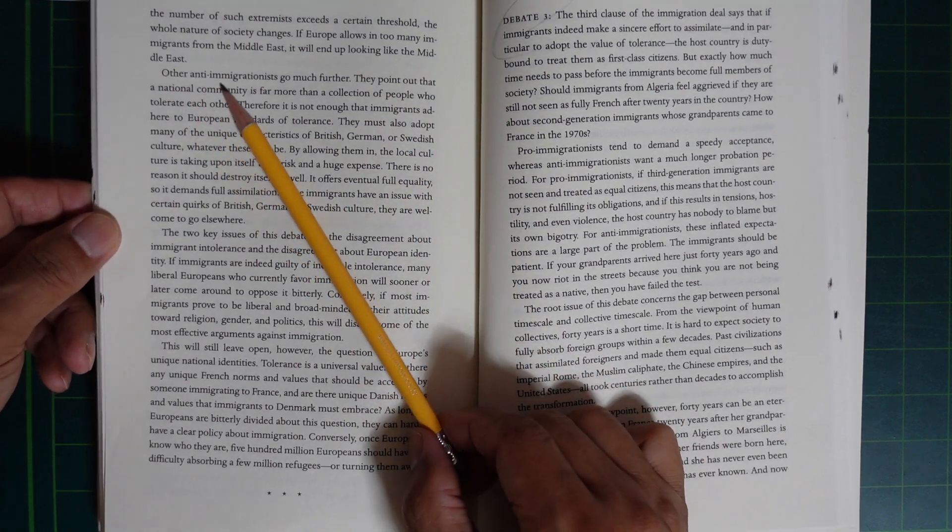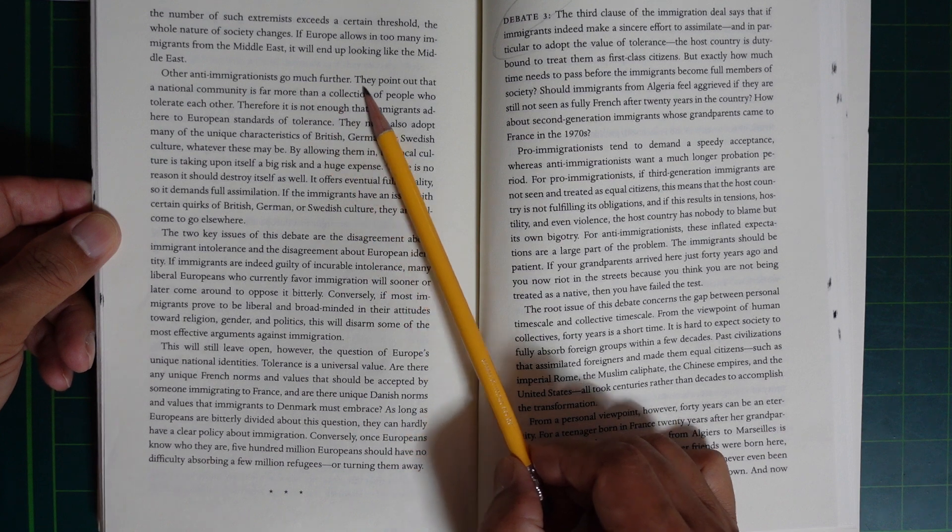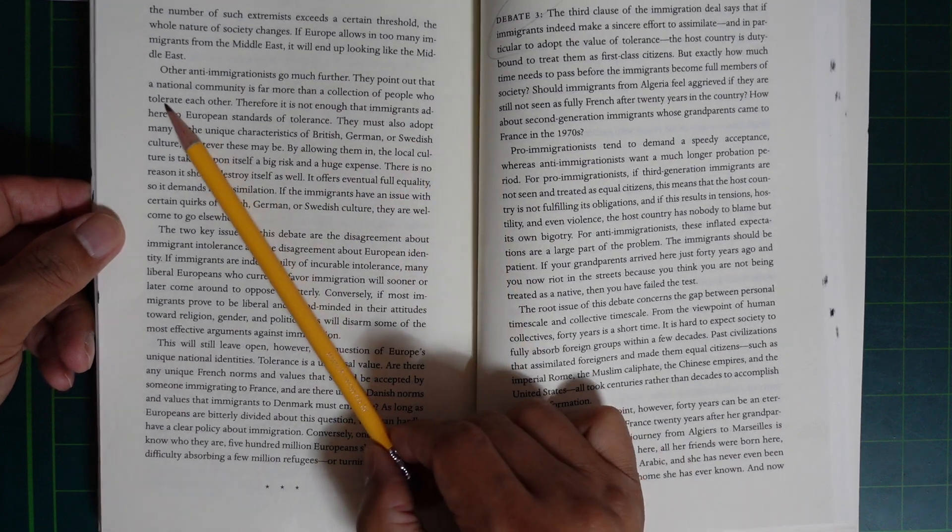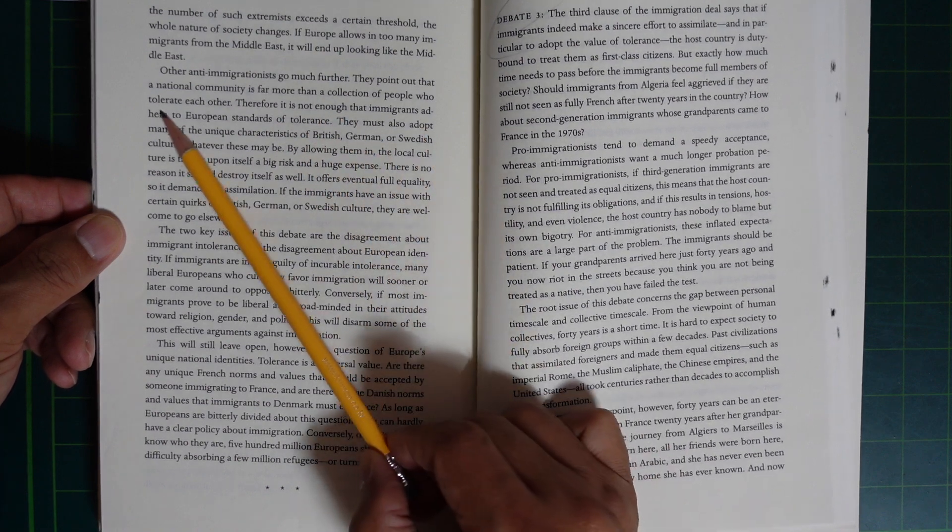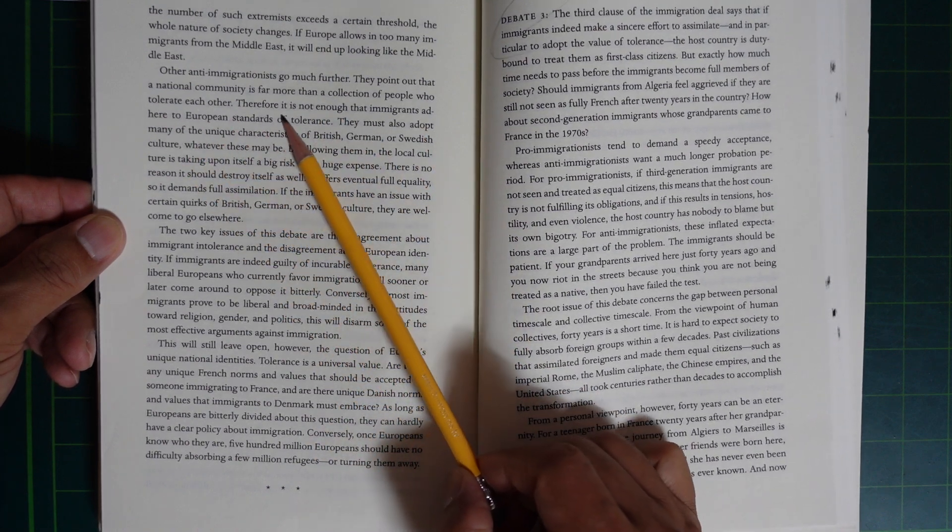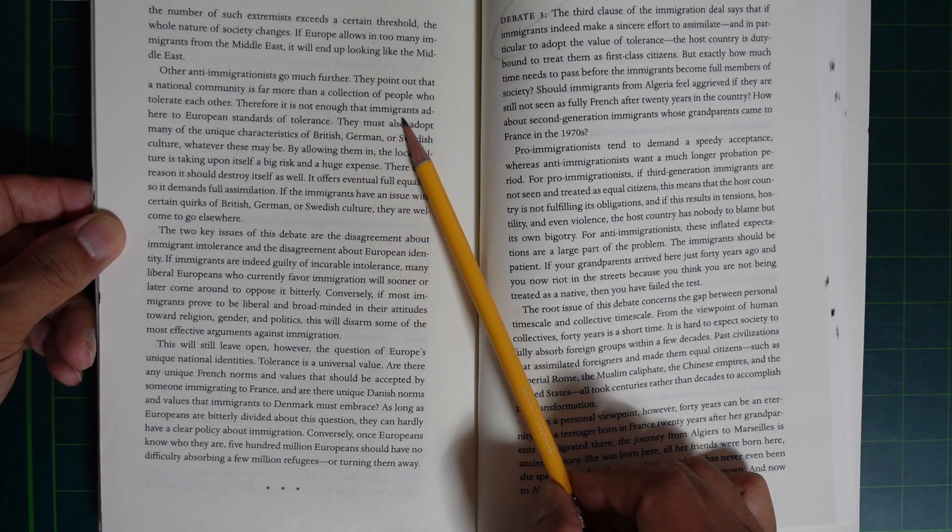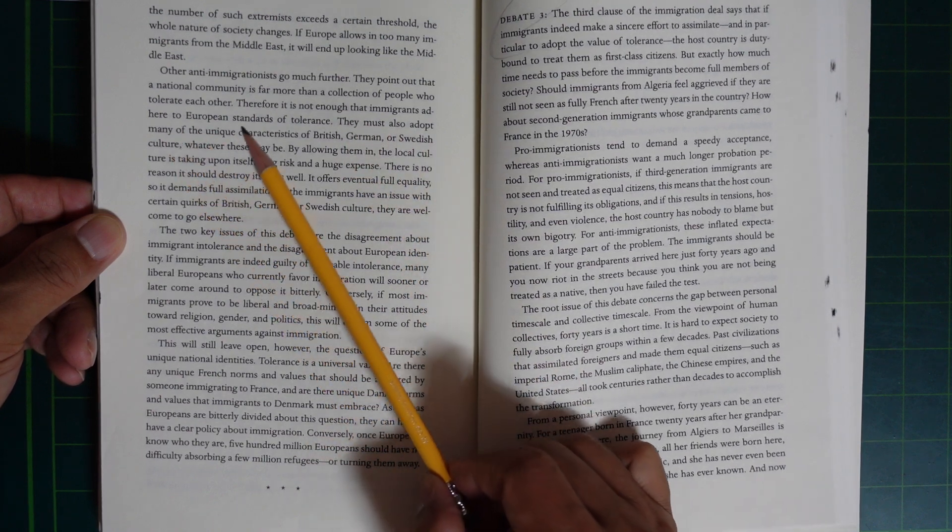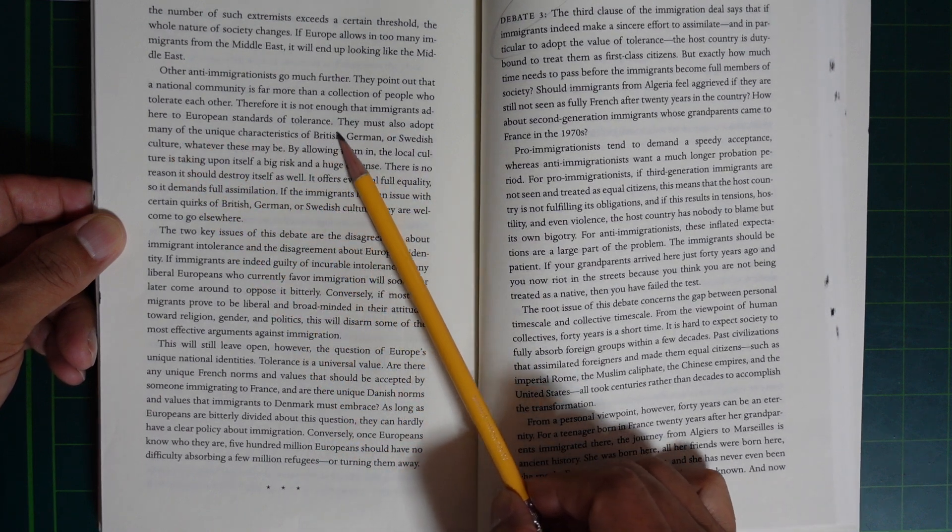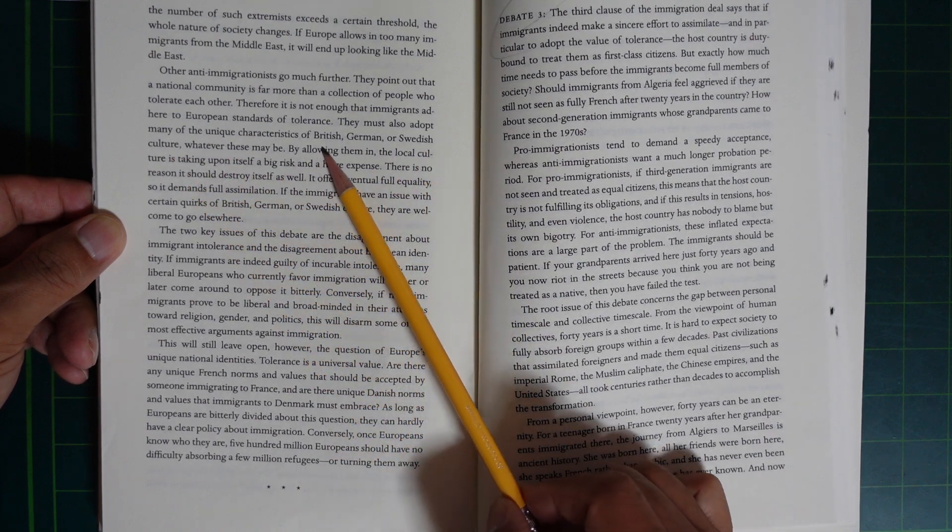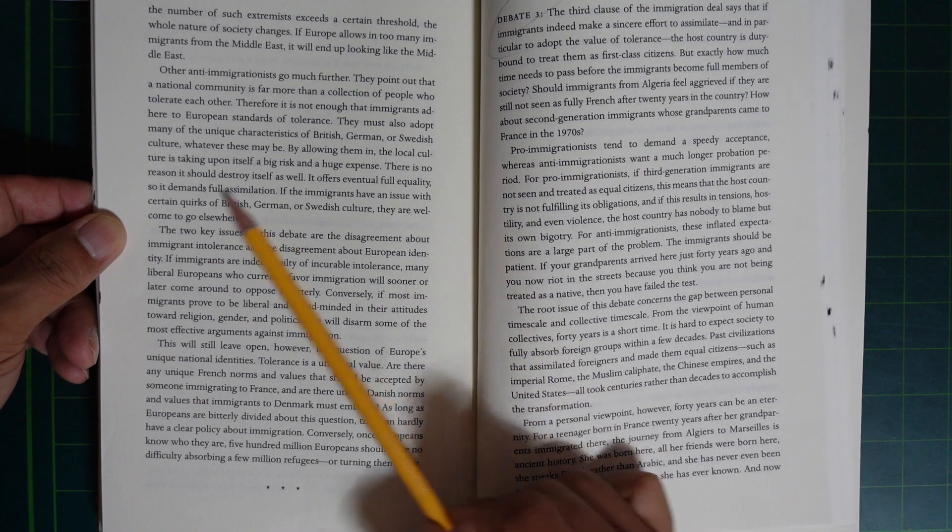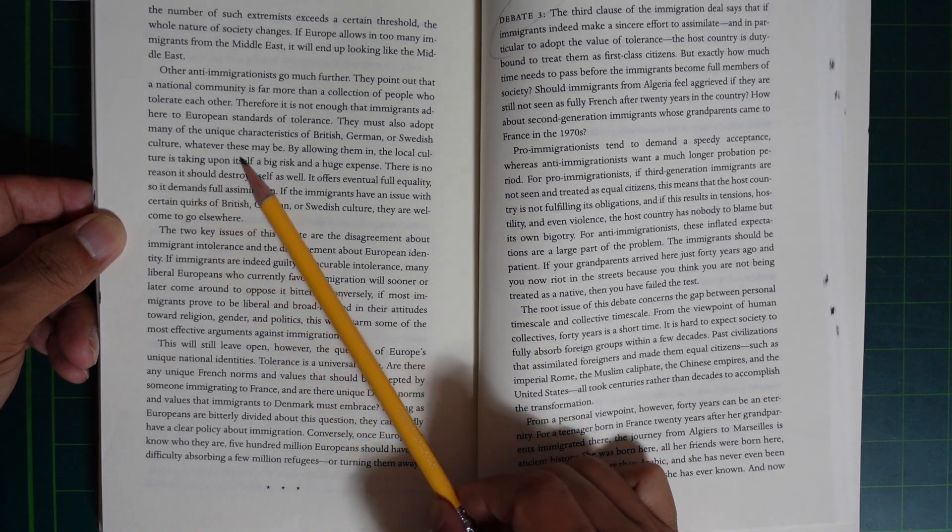Other anti-immigrationists go much further. They point out that the national community is far more than a collection of people who tolerate each other. Therefore, it is not enough that immigrants adhere to European standards of tolerance. They must also adopt many of the unique characteristics of British, German, or Swedish culture, whatever they may be.